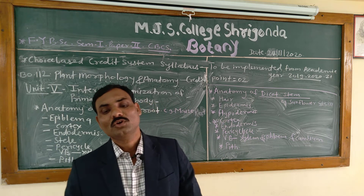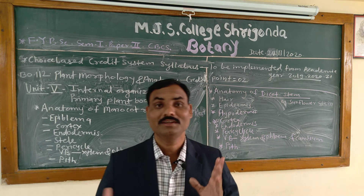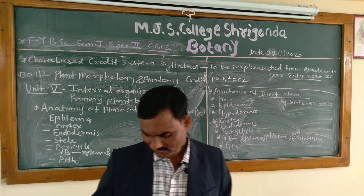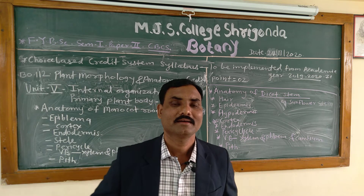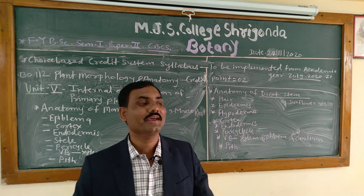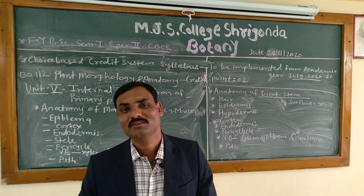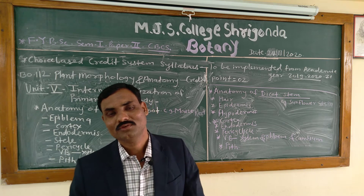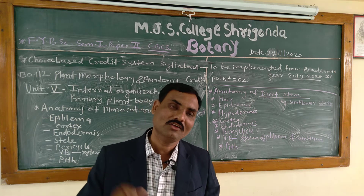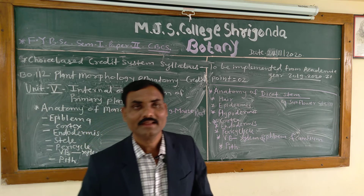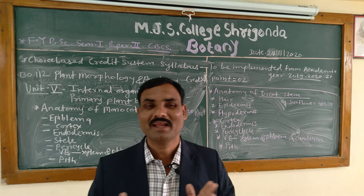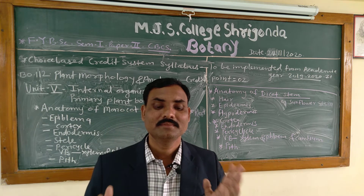The internal structure of the monocot root shows the following details. First is the epiblema: the outermost layer is the epiblema and it is a single layer with numerous root hairs. Root hairs are present on both tap root and adventitious root systems. In a mature root, the layer below the epiblema is called the exodermis.